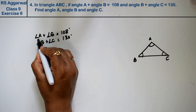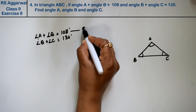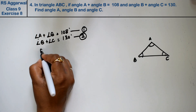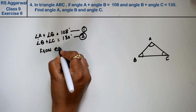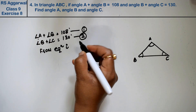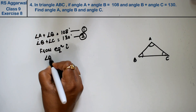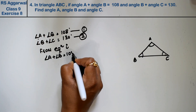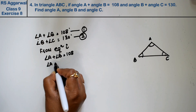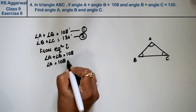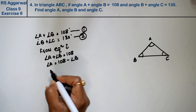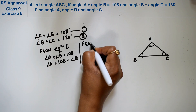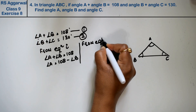From the first equation, we find the value of angle A. Angle A plus angle B equals 108, so angle A equals 108 minus angle B.